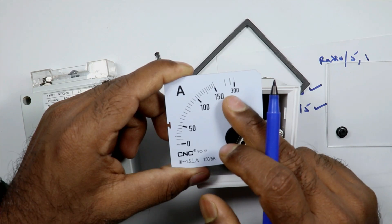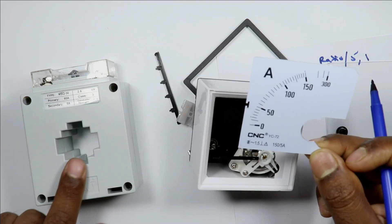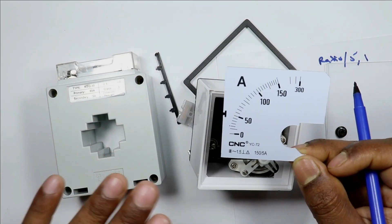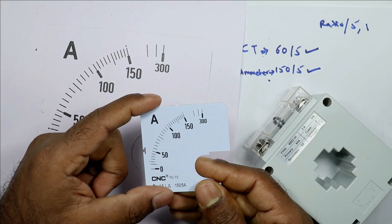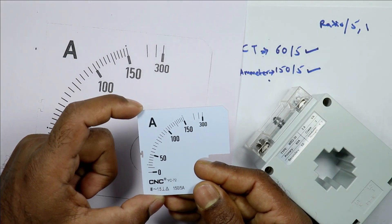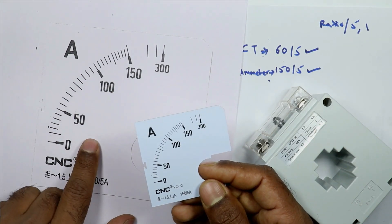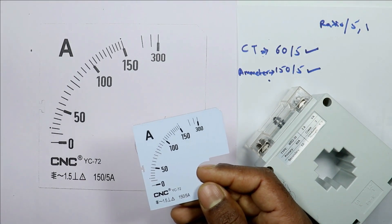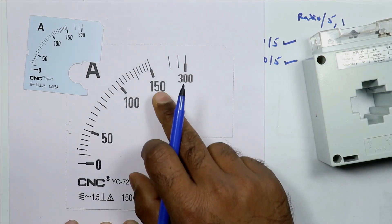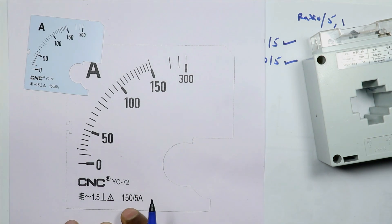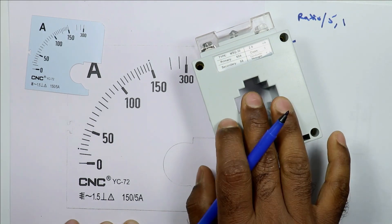Now the values which are written over here have to be changed according to CT. How to do this? Let's understand. I don't want to destroy this scaling so I took a printout of this, where I will explain you in detail. What you have to do is the highest range, that is 150. The ratio of CT was 150 by 5. So in place of 150 we have to write this ratio.